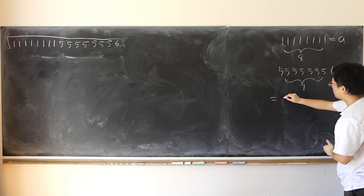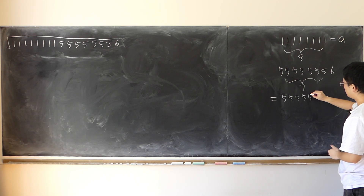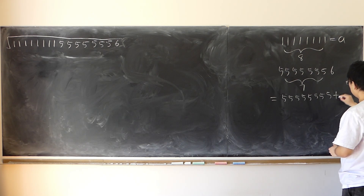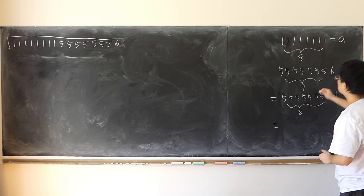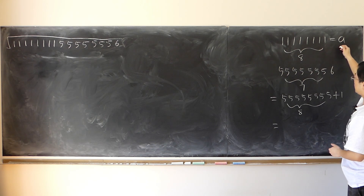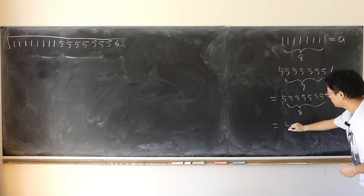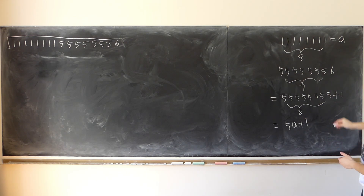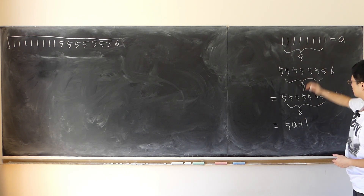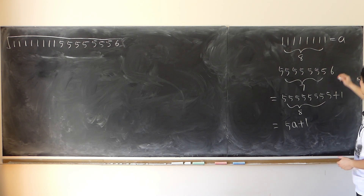Counting through: one, two, three, four — eight fives plus one. So that's eight times five plus one. Eight digits: five times eight plus one.